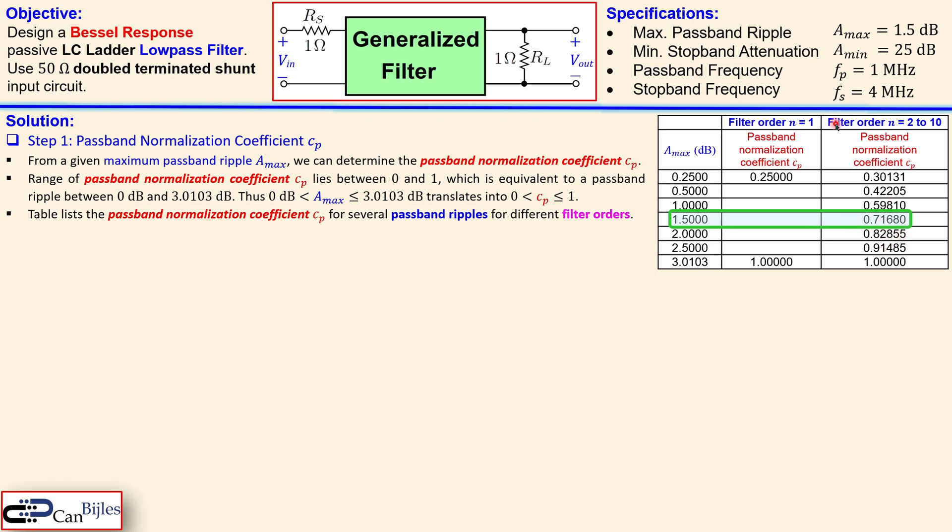That means the filter order is then between 2 and 10. Still of course not specified what the order of our filter is, but we know that it is between 2 and 10. So we need more data from the minimum stopband attenuation and also what we need to use is the CP. So a_max of 1.5 dB translates to a CP which is our passband normalization coefficient of 0.7168.